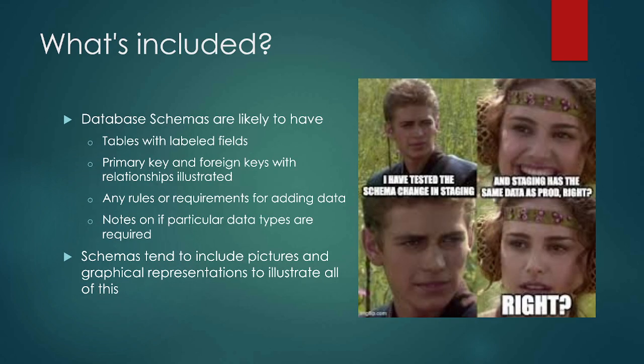So what's included in a database schema? In general you're going to have things like tables. The tables should have labels and they should also have labeled fields — so we might have a table of book titles, a table of author titles, a table of publishers, and so on. Then we're going to have primary keys and foreign keys labeled. All the tables will have a primary key, and the foreign key is how we illustrate the relationship between the tables — things like book ID, author ID — and that might go into one table showing the relationship of all of those other tables.